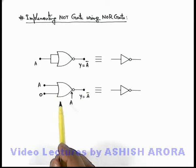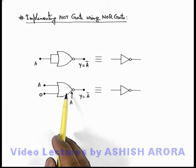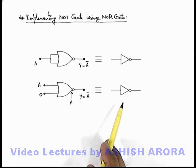So these are two ways in which, by using a NOR gate, we can implement a NOT gate.